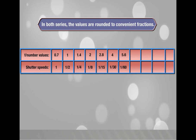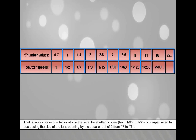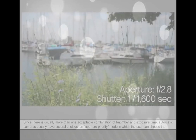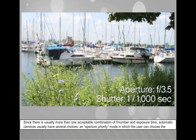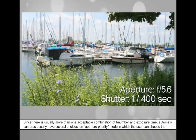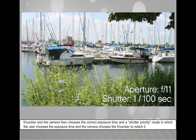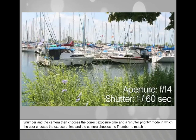The values are rounded to convenient fractions. Within the linear range of the exposure curve, 1/60 at f/8 results in the same exposure on the film as 1/30 at f/11 — an increase of a factor of 2 in the time the shutter is open is compensated by decreasing the size of the lens opening by the square root of 2, from f/8 to f/11. Since there is usually more than one acceptable combination of f-number and exposure time, automatic cameras usually have several choices: an aperture priority mode in which the user chooses the f-number and the camera chooses the exposure time, and a shutter priority mode in which the user chooses the exposure time and the camera chooses the f-number to match.